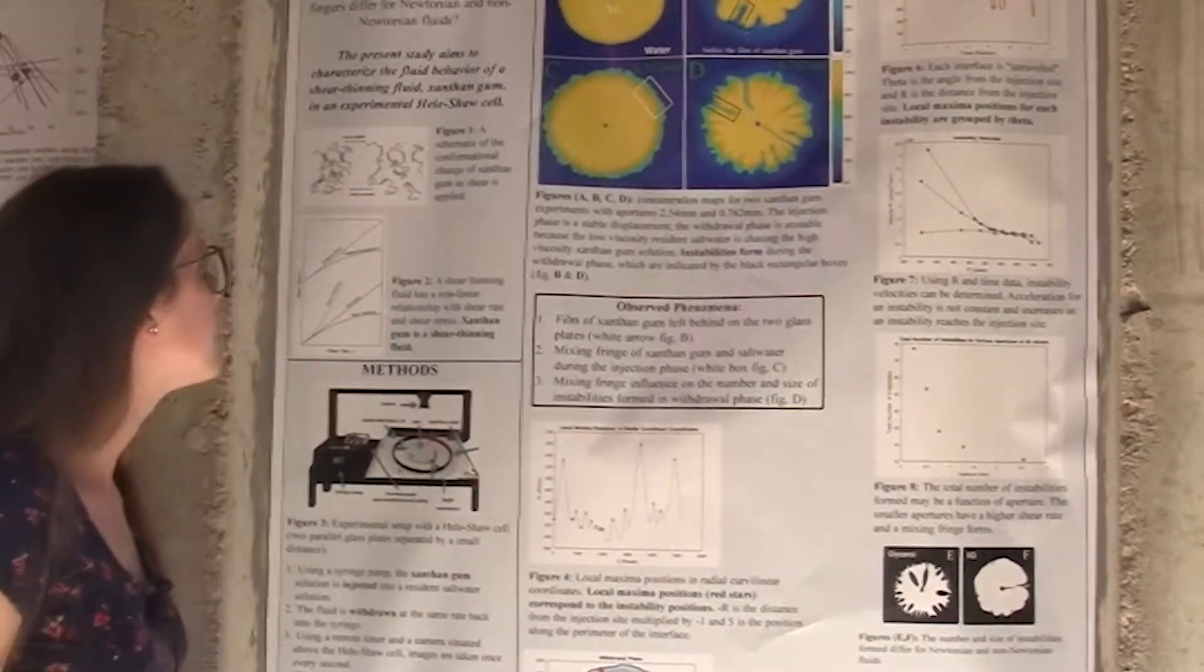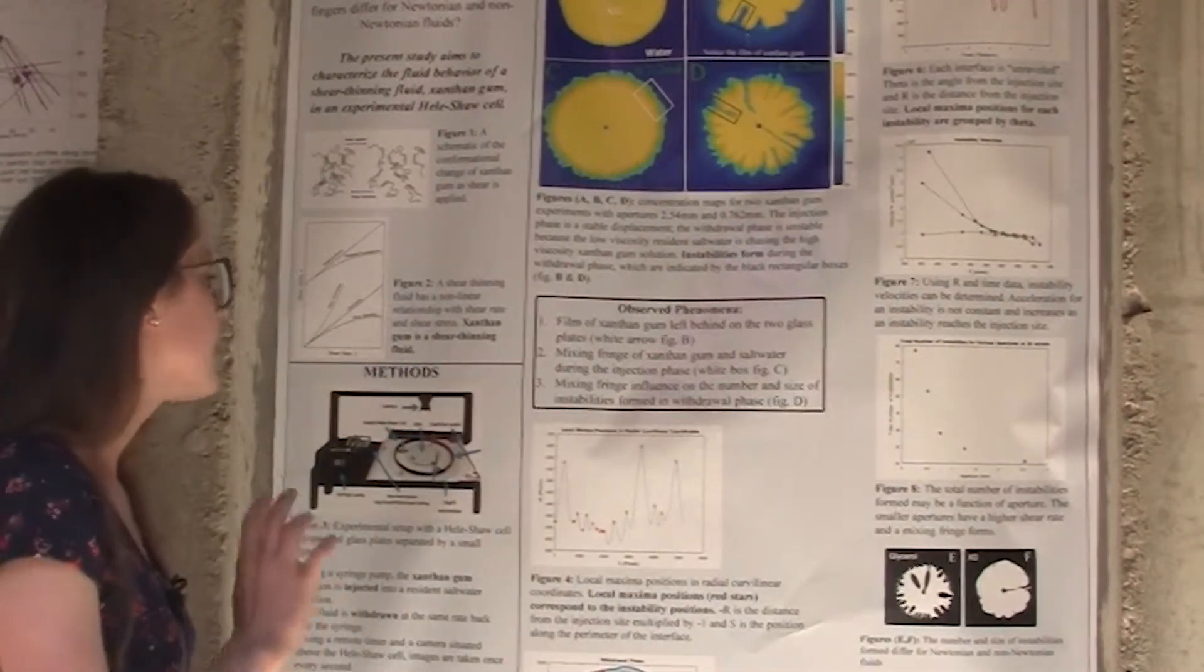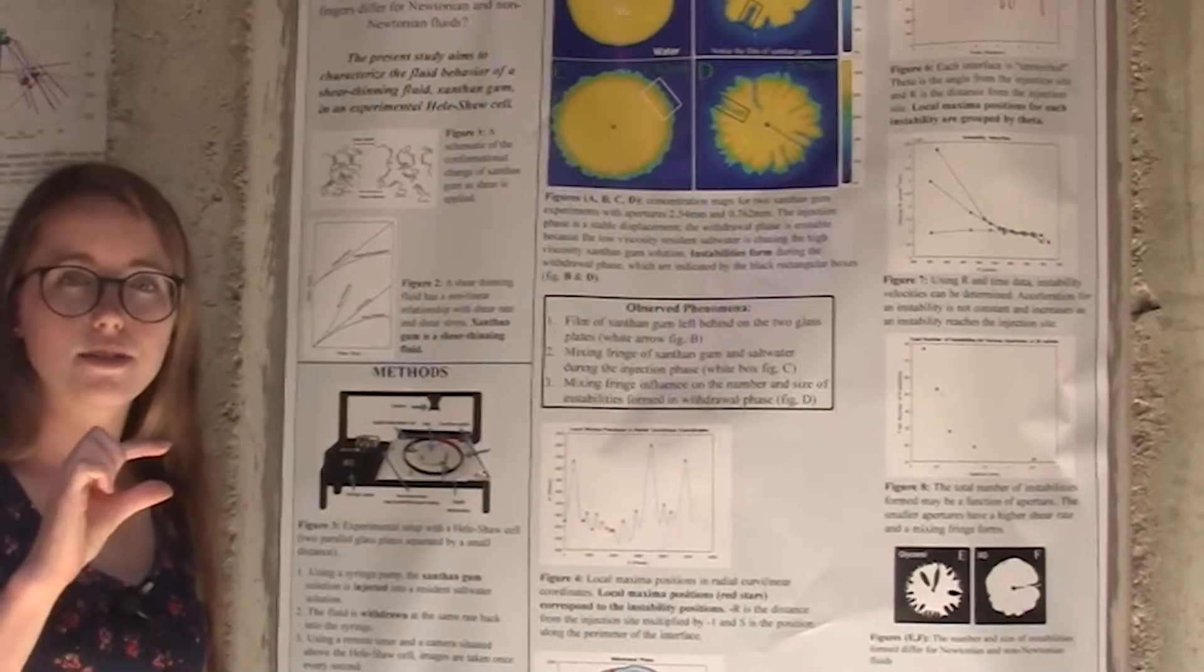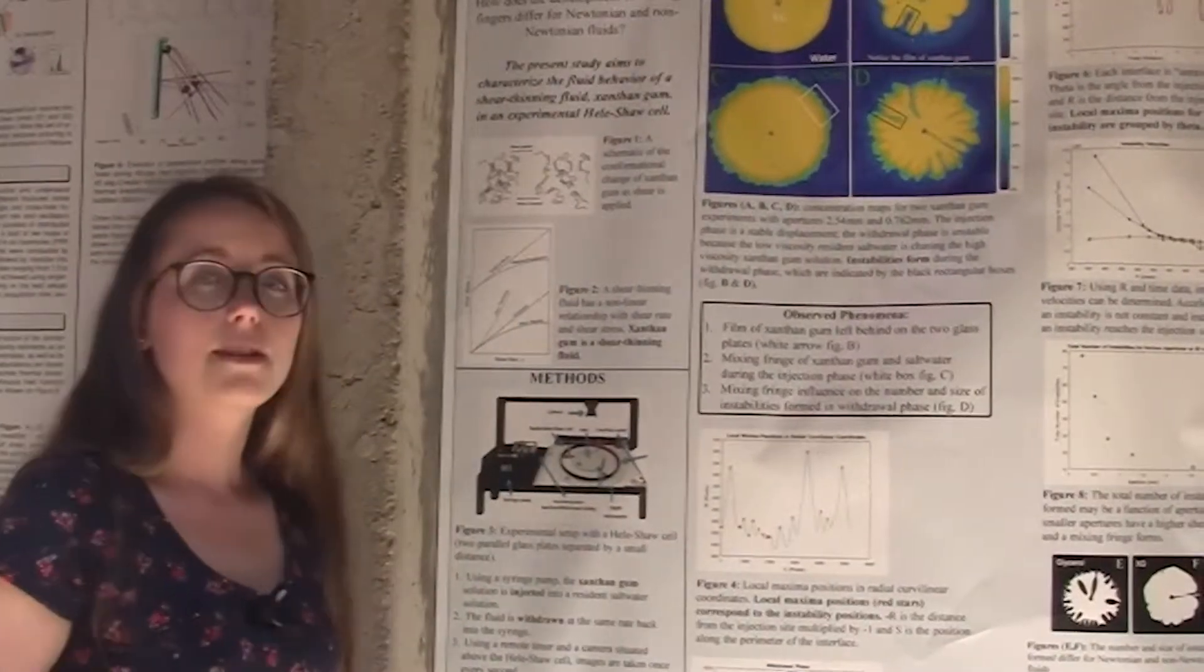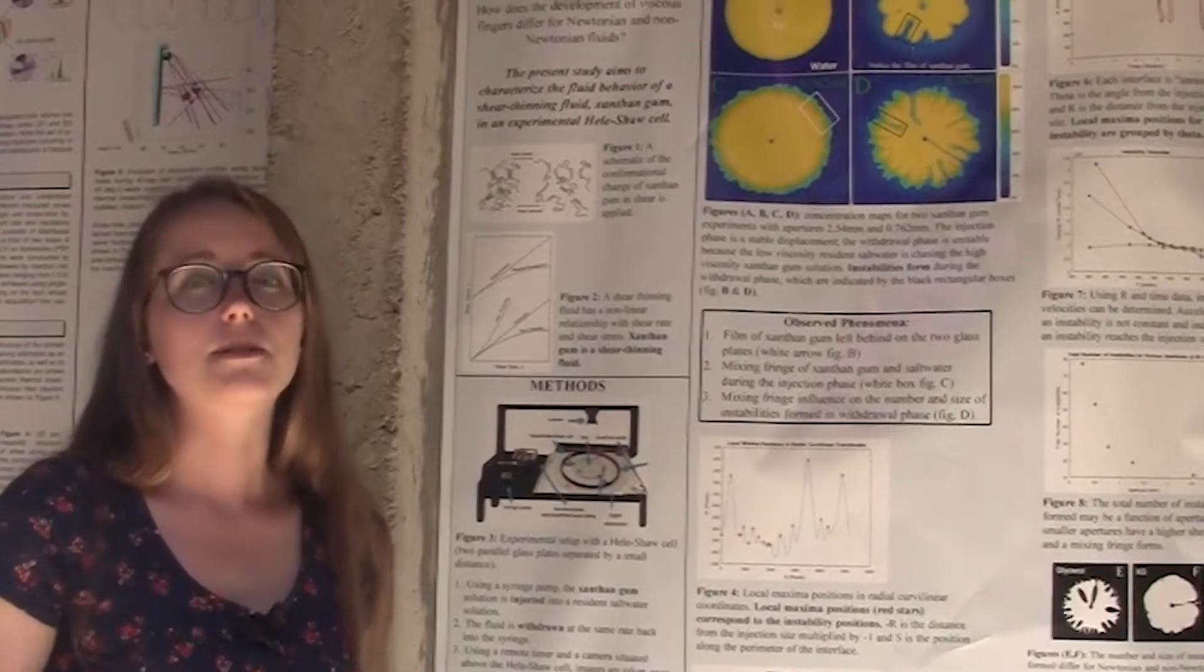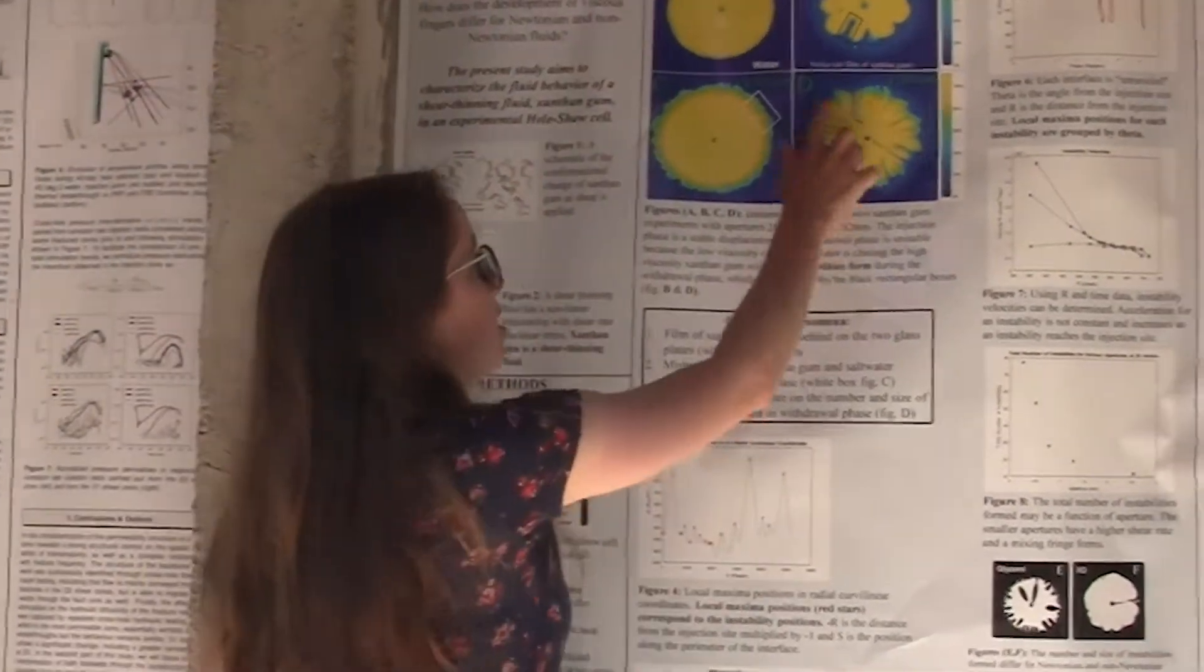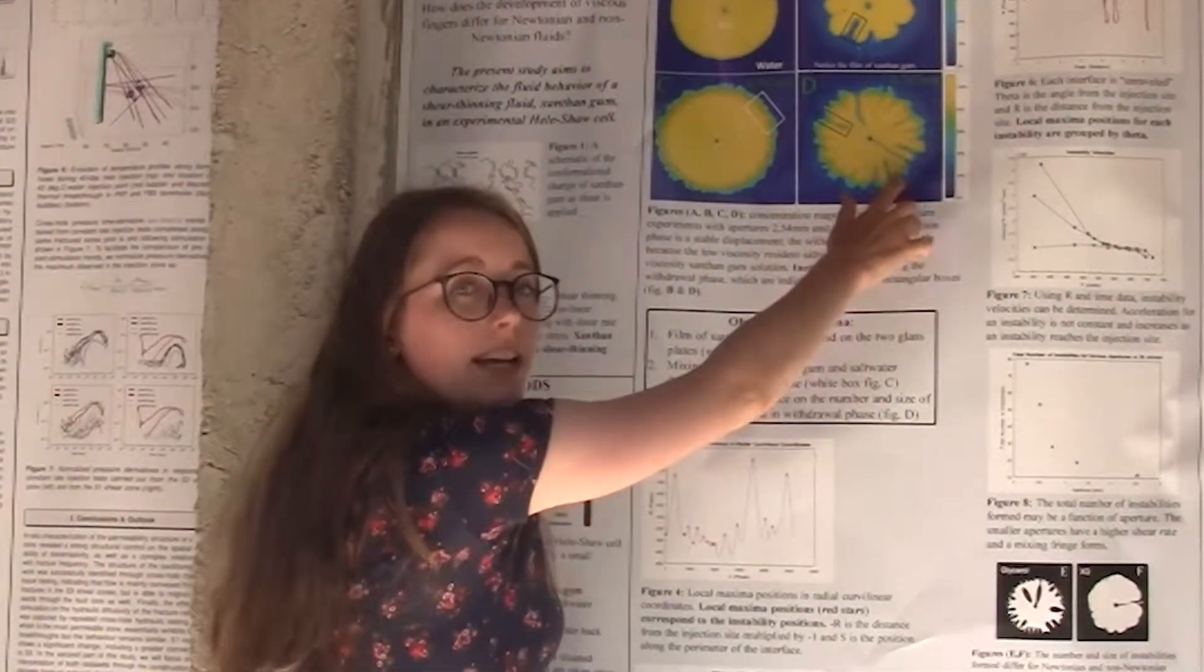What we're interested in looking at is how changing the aperture, the gap between the two glass plates, and the injection rate for the syringe pump is going to be affecting the shear rate that the fluid experiences. And that's also going to change the instabilities that are forming in the withdrawal phase.